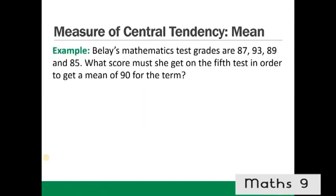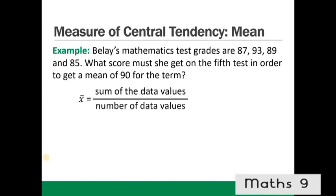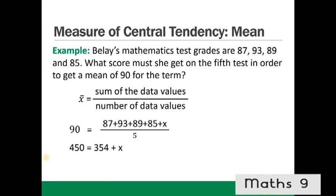Another example: Belay's mathematics test grades are 87, 93, 89, and 85. What score must she get on the fifth test to achieve a mean of 90? Using the formula: 90 = (87 + 93 + 89 + 85 + x) / 5, so 450 = 354 + x, giving x = 96. She must get a score of 96 on the fifth test.